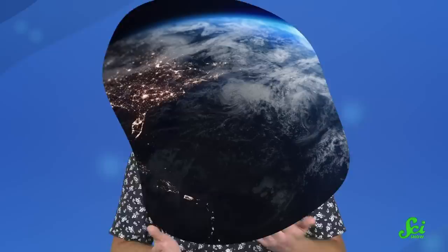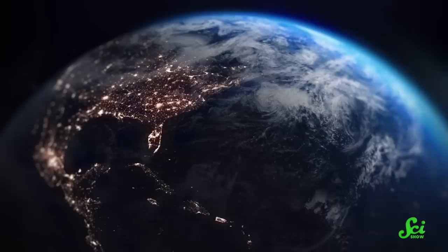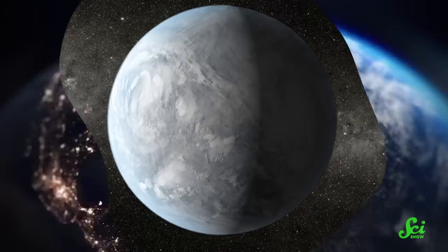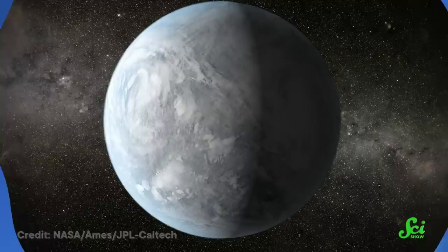So ice might be the key to making some watery worlds fertile, and life could exist in places we never imagined possible. So the next time you hear the phrase habitable planet, maybe don't picture a world like Earth. Picture a giant ball of ice or a world so watery it makes ice below its liquid ocean. It might seem a strange new world to us, but for a certain kind of organism, it might be the perfect home.